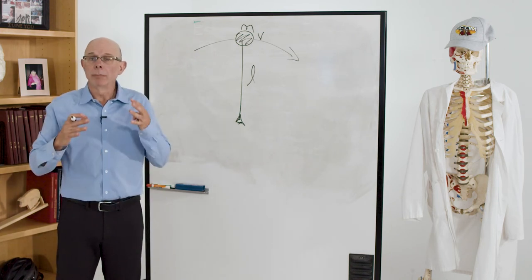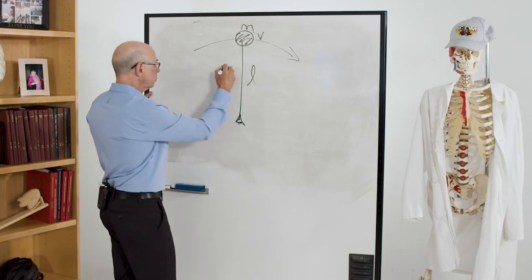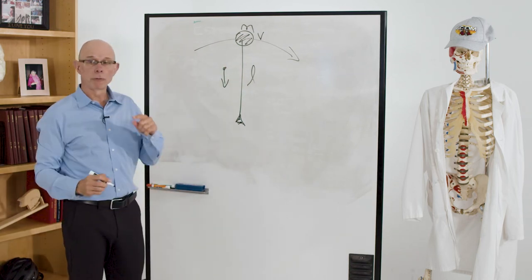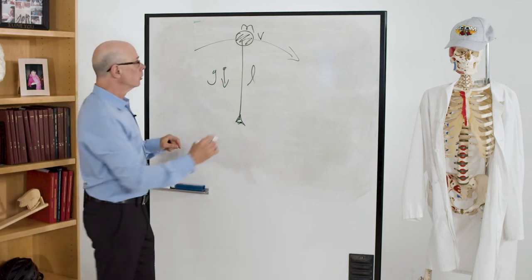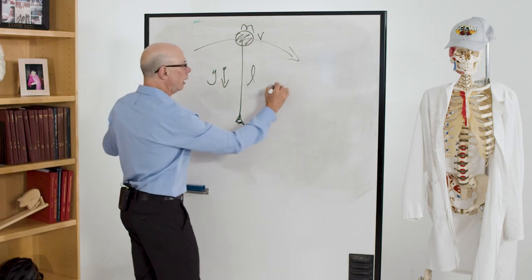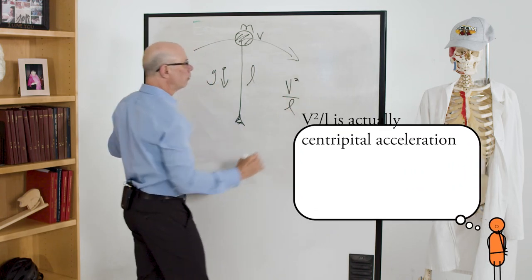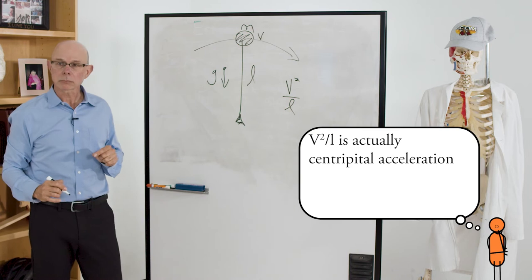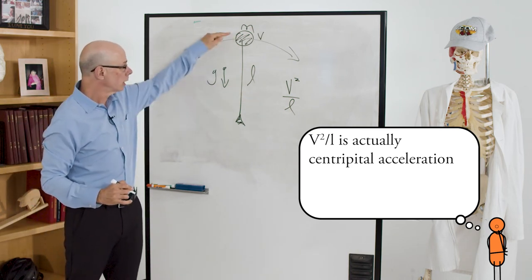And we can compute that speed. It's when the centripetal force exceeds gravity. So the centripetal force is V squared over L. So that's the centripetal force along this line.